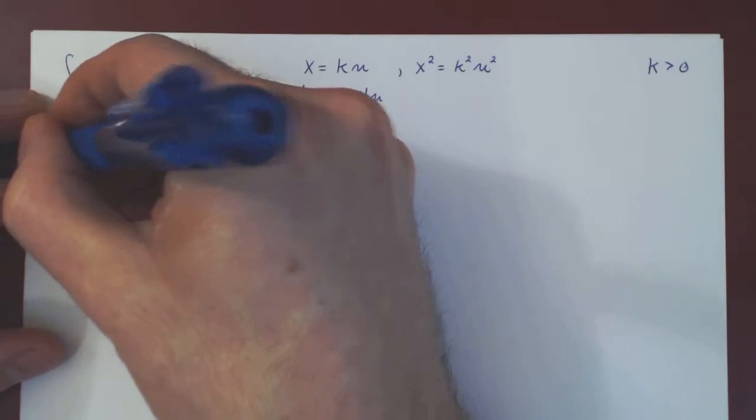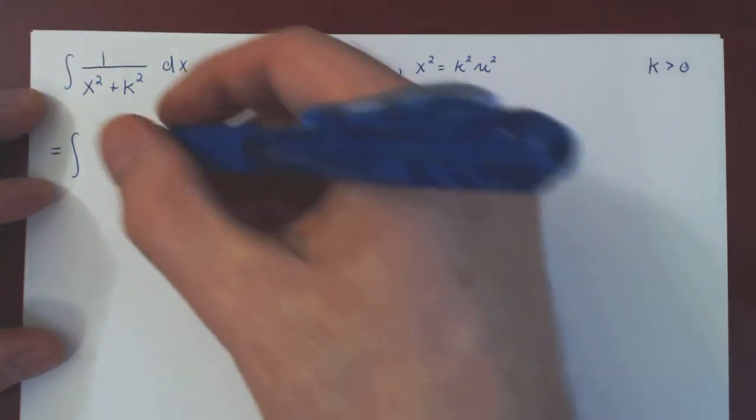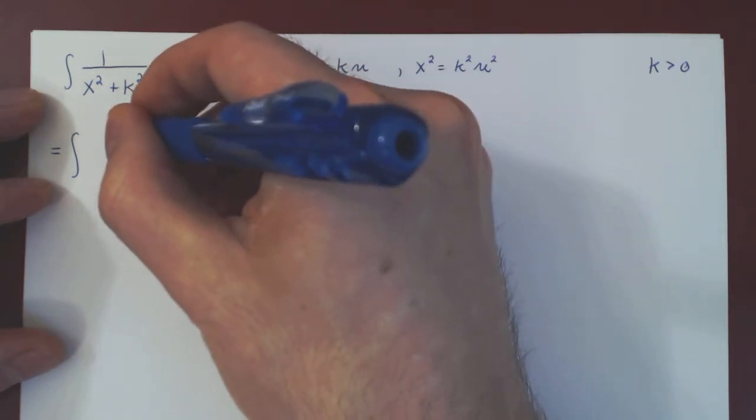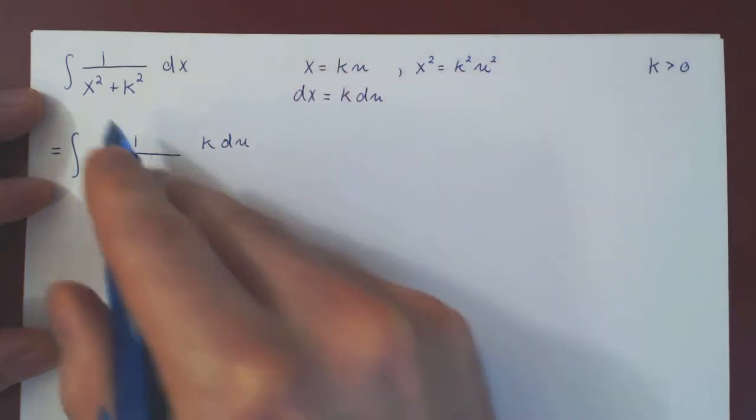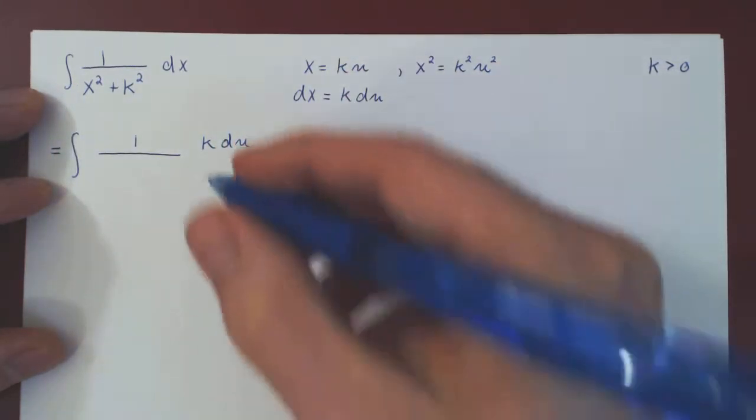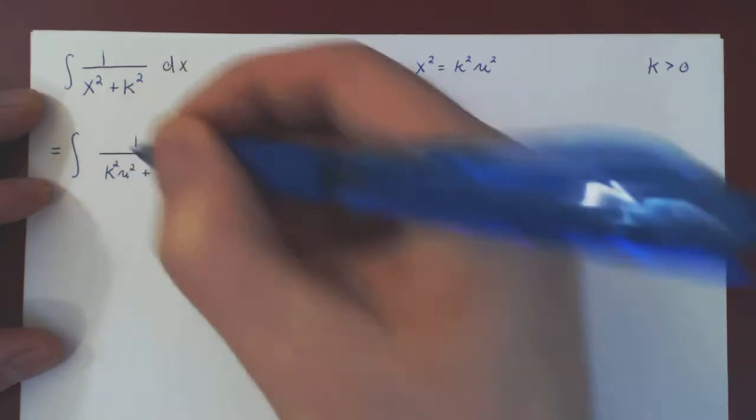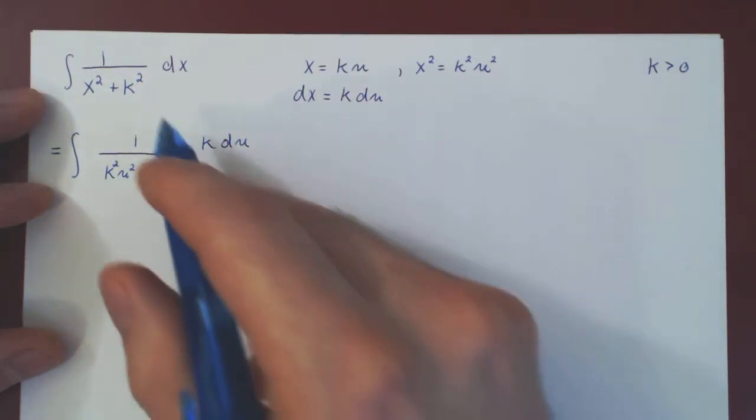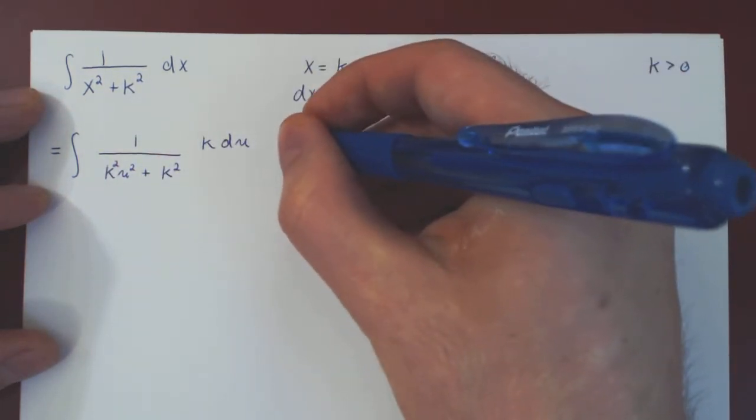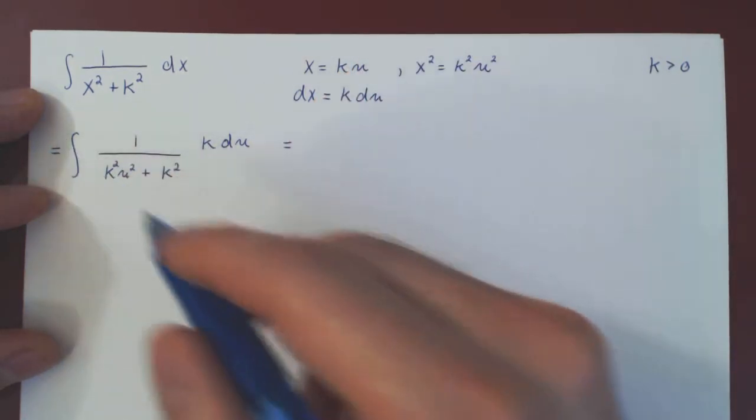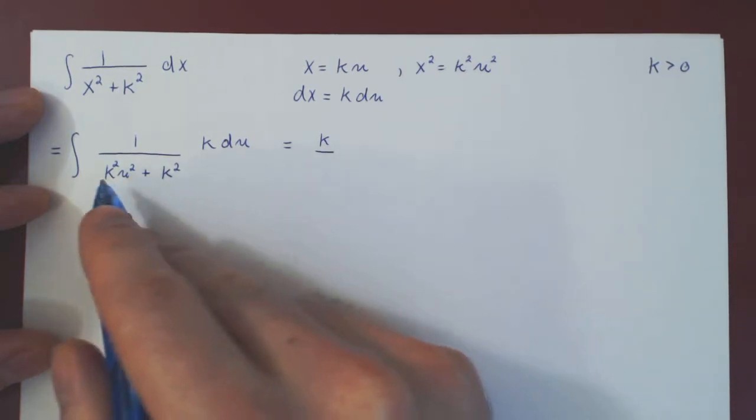And if we replace in the integral, what do we have? So we have dx is k du, and x squared is k squared u squared, plus of course k squared. And now we can do two things. We can first factor the k on the numerator, and we can factor the k squared from the denominator.